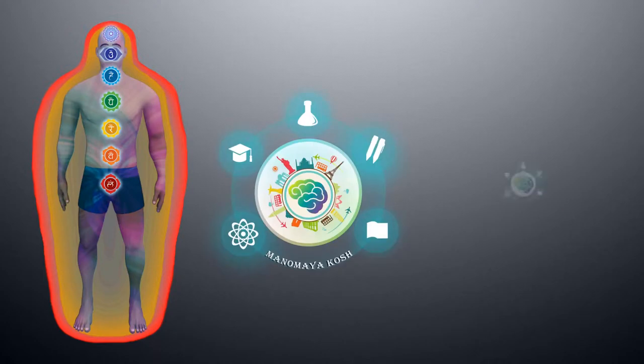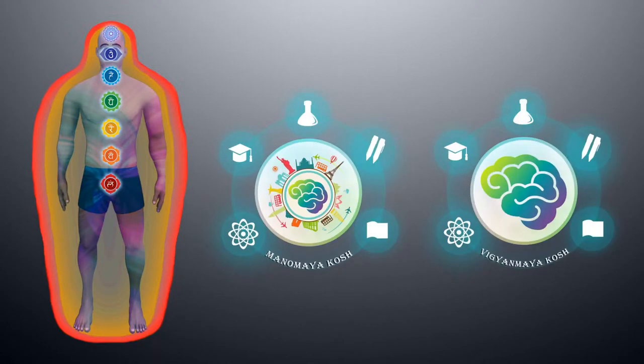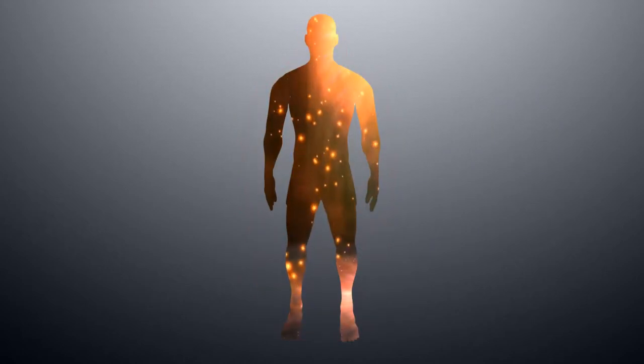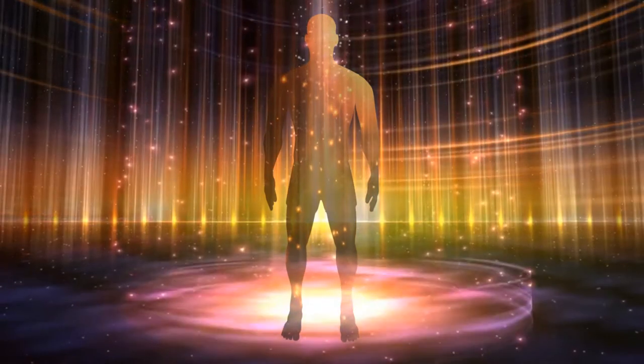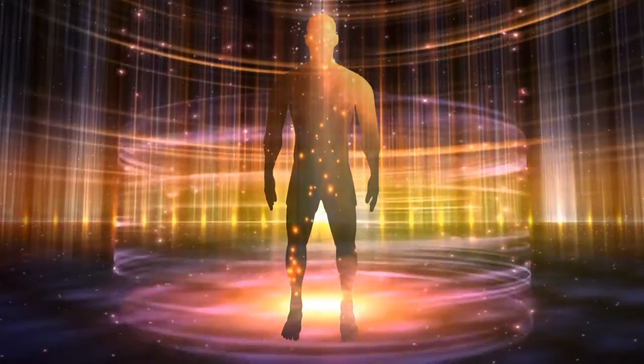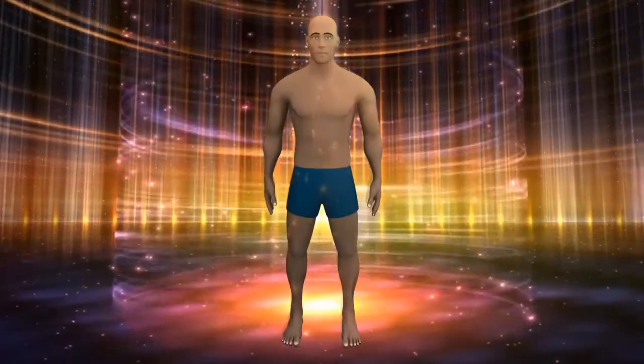The Pranamaya kosh, Manomaya kosh and Vigyanamaya kosh together are called as Sukshma sharira. Sukshma sharira or the subtle body is the body of the mind and the vital energies which keep the physical body alive.